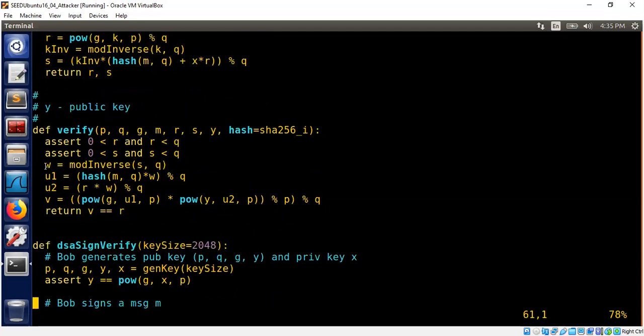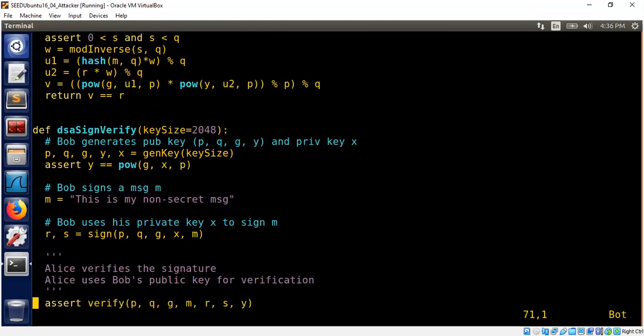The verification phase, I compute w, u1, u2, and check whether v is equal to r. This is the main function I wanted to show to you. First step is for Bob to generate the public and private key. Bob signs a message using the signature method. As you can see, signature requires private key. And now Alice can verify the signature is correct by taking all the public data p, q, g, m, r, s, y. They're all public data. That's basically it. Thank you very much for your attention.